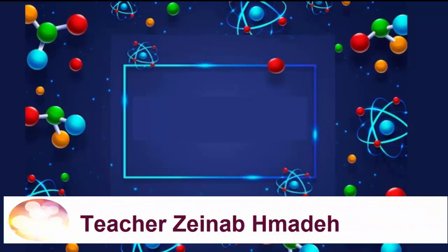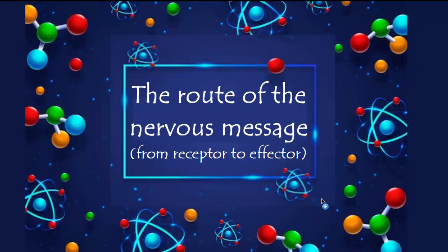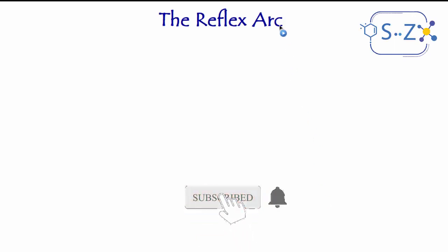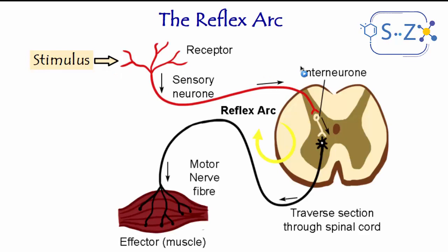Welcome to a new video. Today we're going to talk about the route of the nervous message — how does it pass from the receptor to the effector organ? First of all, let us recall the reflex arc, which starts by a stimulus, either internal or external. It can be physical or chemical. This stimulus causes the nervous message to move from the receptor through the sensory neuron through to the nerve center.